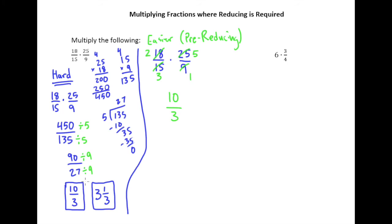So again, this is pre-reducing. And so the only rule is you can divide anything on top you want by a number as long as you divide something on bottom by that same number. All right, let's do one more example.